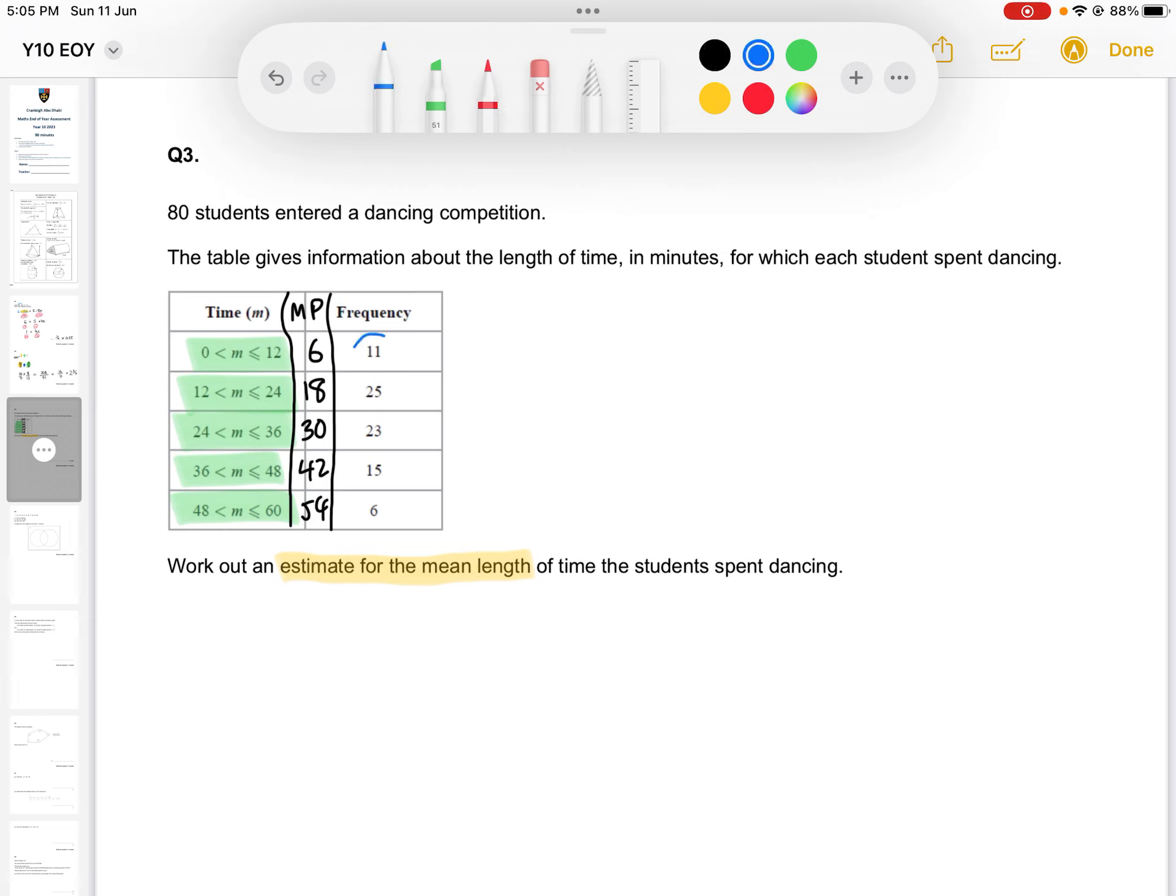Then, using those numbers, we have 11 of these sixes, or at least 11 numbers, 11 students in between those two times, so we're going to use six, 11 sixes, 25 18s, so on and so forth. We multiply these together to get what I refer to as the mini totals.